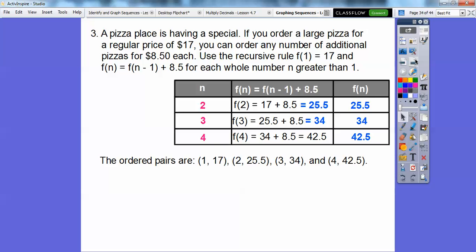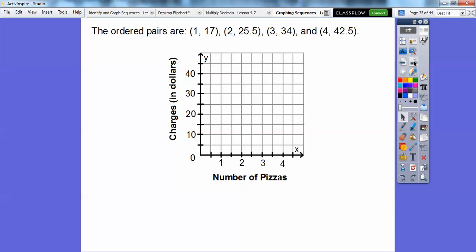So our ordered pairs become those four sets of ordered pairs. Now, they stopped at four because we're assuming they're only going to eat four pizzas, but we could have kept going. But we want to graph that, so let's just graph these four ordered pairs. Nice and easy, right?